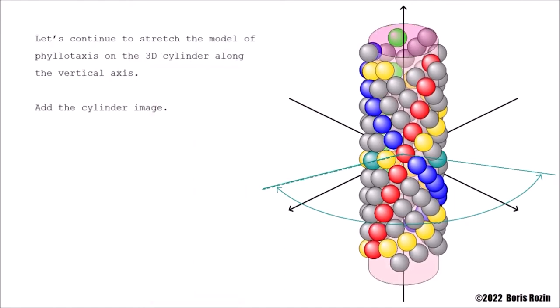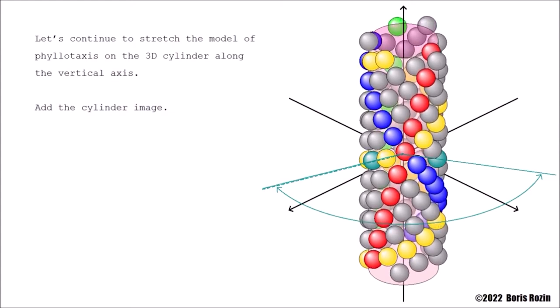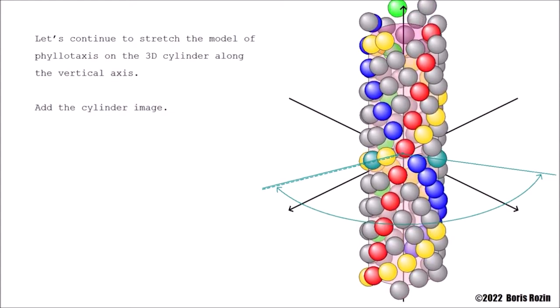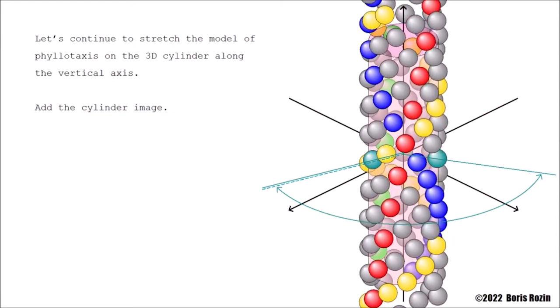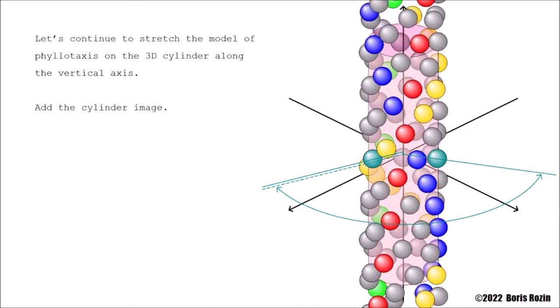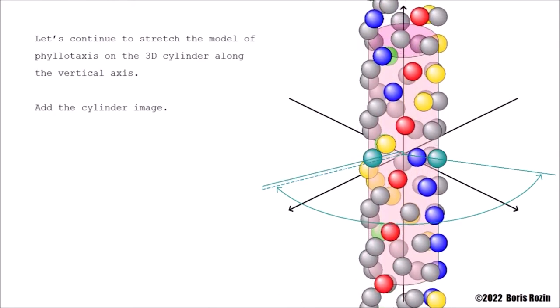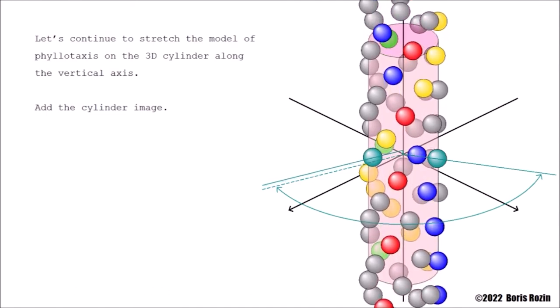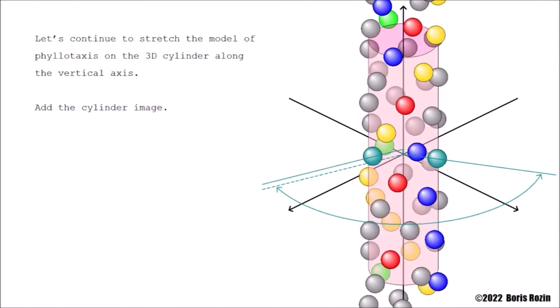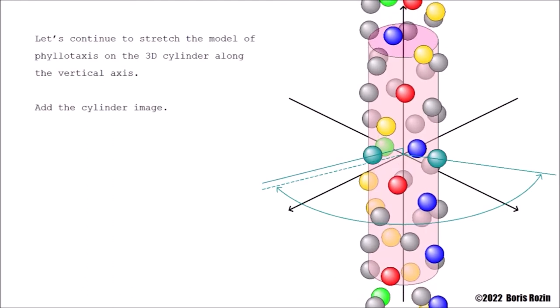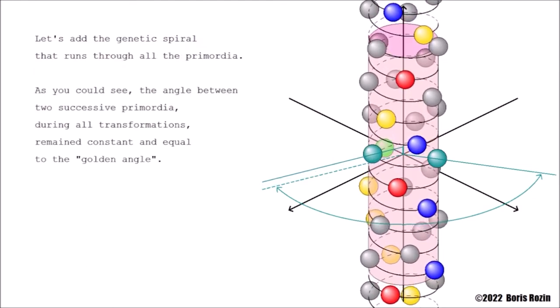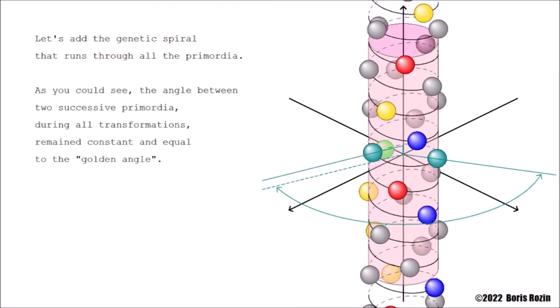Let's continue to stretch the model of phyllotaxis on the 3D cylinder along the vertical axis. Add the cylinder image. Let's add the genetic spiral that runs through all the primordia.